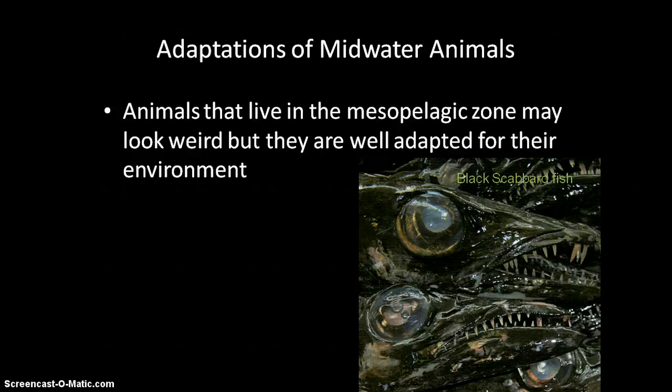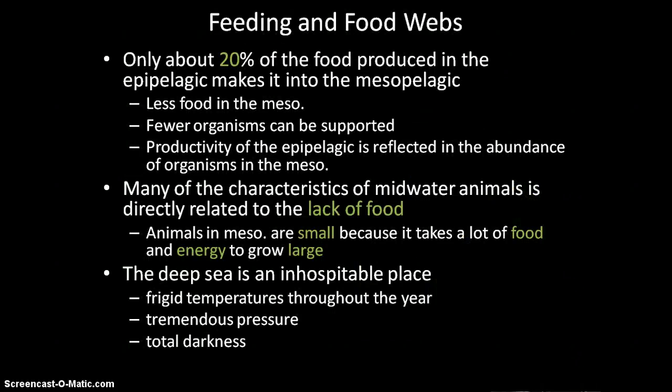The black scabbard fish is another mesopelagic fish — they look really freaky, weird, and scary, but they are very well adapted for the environment they live in. Most of the adaptations we see in mid-water animals, particularly fish, are because there's not very much food there compared to the epipelagic. Only about 20% of the food produced in the epipelagic ever makes it to the mesopelagic, so because there's less food, you have fewer animals. Most characteristics of mid-water animals are related to the lack of food — they are small because it takes a lot of energy to grow large.